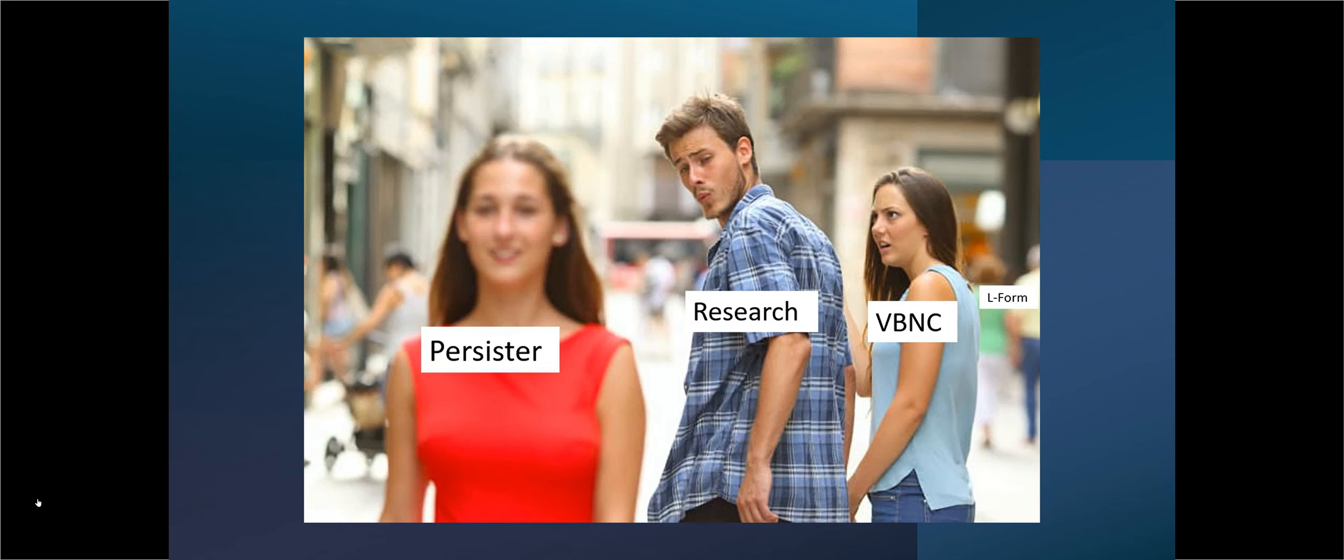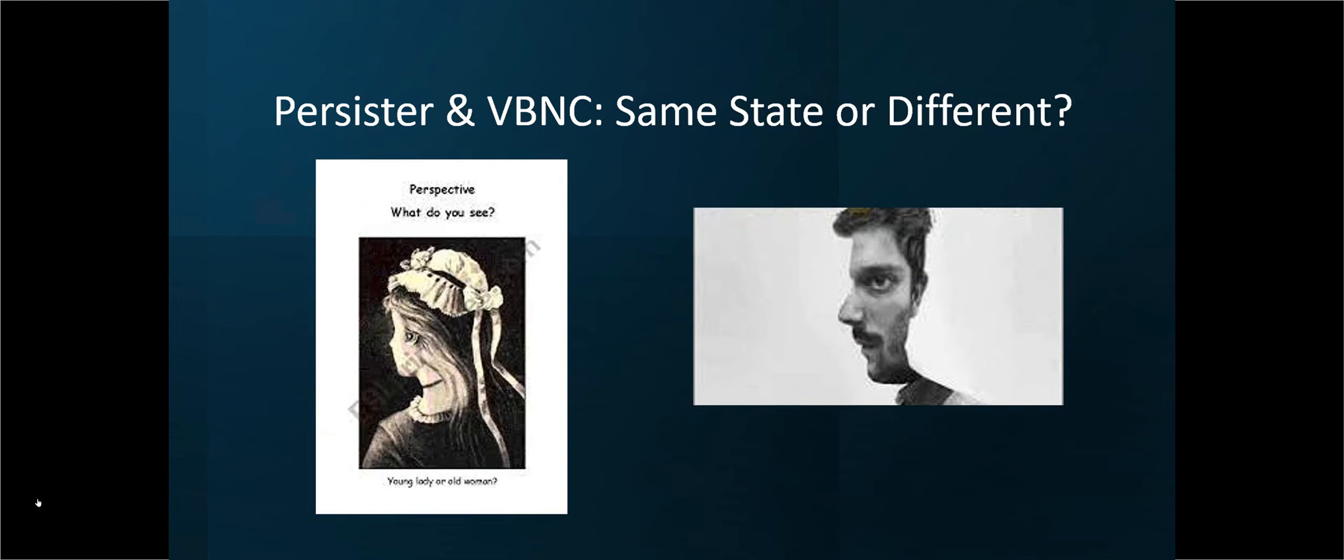Then VBNC came on - viable but not culturable - and that dominated the 80s and 90s. Persisters have been around, but food microbiologists didn't really consider them. I remember an IFTPS meeting in 2015 that had a session on persisters in one room and VBNC in the opposite room. People are interested in persisters, and the big question, debate, is what is the difference between persisters and VBNC?